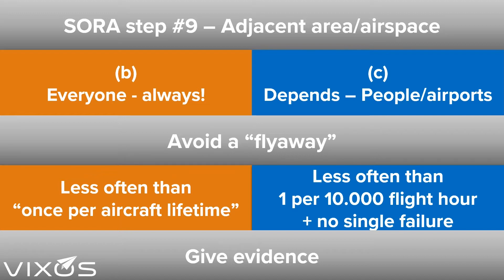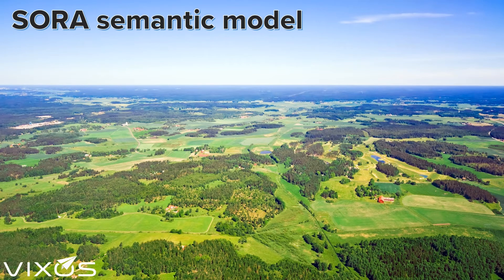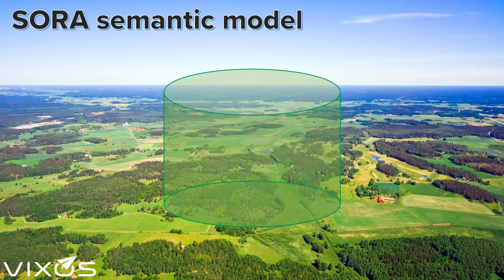Now let us try to be a bit more specific and we will start with part B. Imagine that you want to fly at some location, say here. But first, to understand the language of step nine, we need to know some terminology from the SORA semantic model. This is a model of the various flight zones found in the SORA. The area where you want to conduct your operations is drawn in green, here exemplified by a circle — it doesn't have to be a circle, but it is easier to draw and it keeps the graphics simple. Since we are flying and thus moving in 3D, we need to add an altitude limit to the area, which then becomes a volume — in this particular case a cylinder. This volume is called the flight geography, and this is where your planned flight will take place.